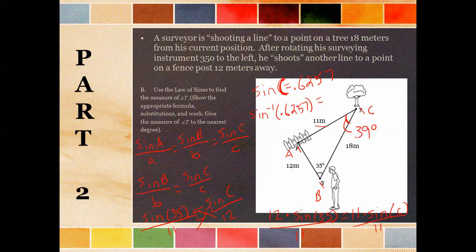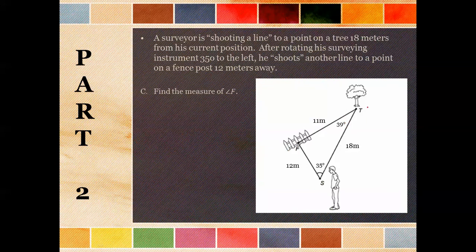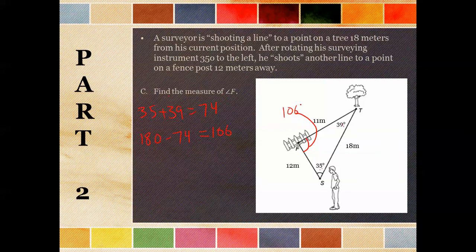So we know that angle T is 39 degrees. The last thing it asks is to find the measure of angle F. We already have two angle measures, so we use the fact that angles in a triangle sum to 180: 35 plus 39 is 74, and 180 minus 74 gives us 106 degrees. This is actually an obtuse triangle — it has this big 106-degree angle. So make sure to follow the instructions and don't use the Pythagorean theorem here.